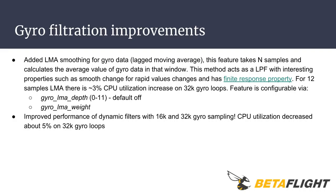In Betaflight 3.4, the performance of dynamic filters on the 16K and 32K gyro sampling loops has also been increased. CPU utilization decreased by about 5% on the 32K gyro loops.